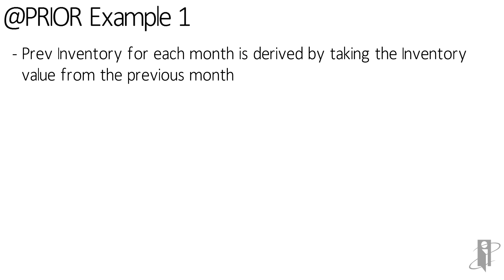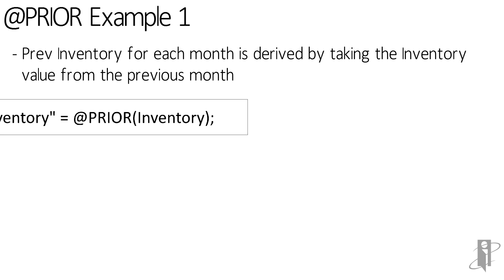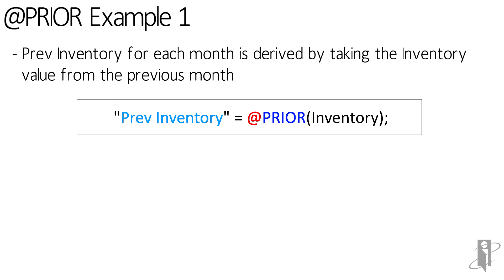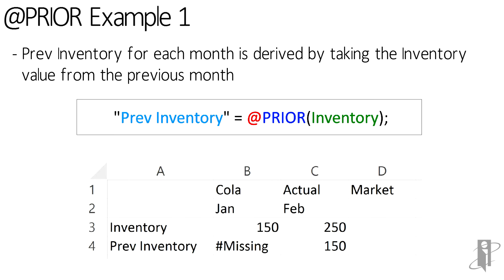In our first example, previous inventory for each month is derived by taking the inventory value from the previous month. The formula for previous inventory is Prior(Inventory). Since the n option is not specified, the default value of 1 is used, which provides the next prior member in the range. The X range list is also not specified, so the Prior function uses the level 0 members from the dimension tagged as time. Here is a sample retrieve showing the previous inventory values for February equal to the inventory values of the prior month.